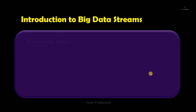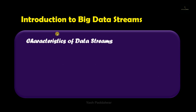Now we'll look into the very important topic of the characteristics of data streams. As we are talking about big data, the size has to be huge, and with this huge volume the data is continuous. That means the rate of generation of this data is more or less infinite. So one characteristic of data streams is that it is always in huge volume as well as continuous, generated at an infinite rate.